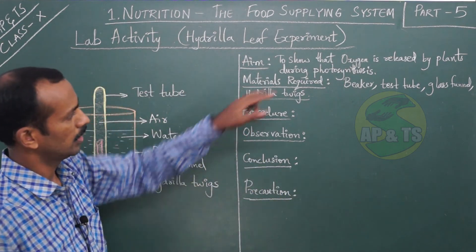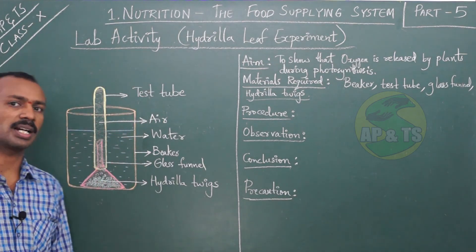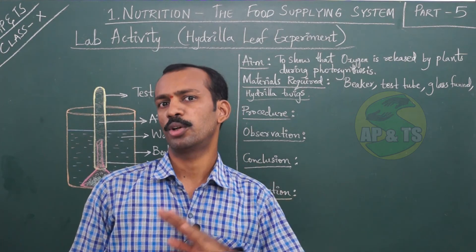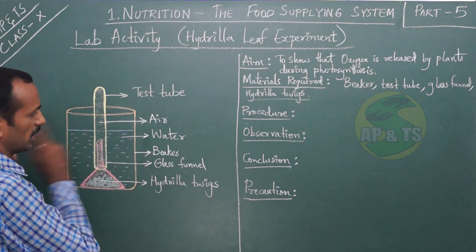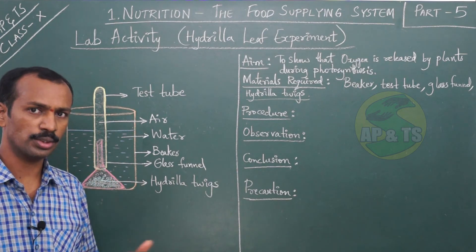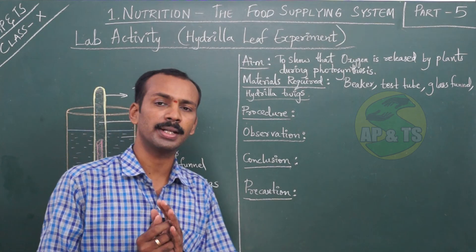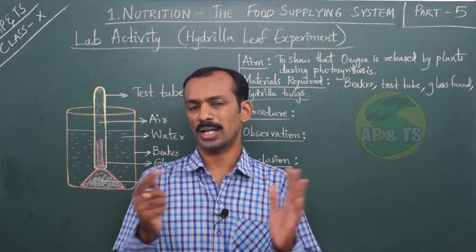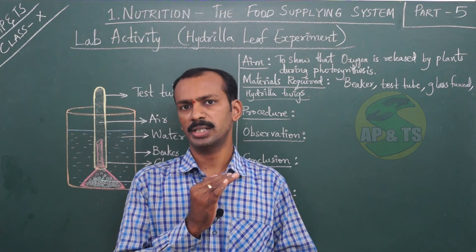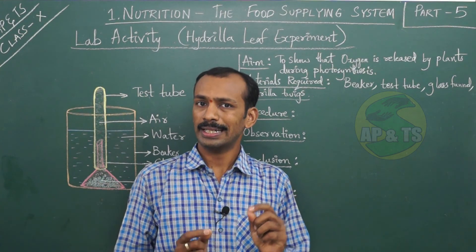With this activity we know oxygen is released by plants during photosynthesis. The apparatus kept in sunlight released oxygen. But the other apparatus kept in dark showed no air bubbles and no oxygen, because photosynthesis requires sunlight — in its absence, no photosynthesis takes place. Comparing the two apparatus tells us that oxygen is released only when sunlight is present.